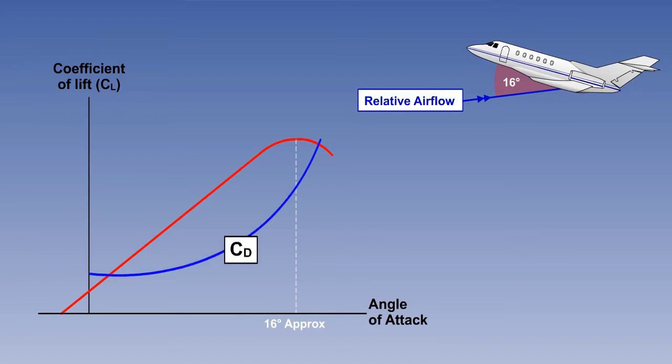On the other hand, notice how the coefficient of drag, CD, shown here with a blue line, continues to increase as the angle of attack increases. At excessively high angles of attack, we can see this will lead to inefficient flight. And if the angle of attack is increased still further, it will lead to a stall — in this case, around an angle of attack of 16 degrees.